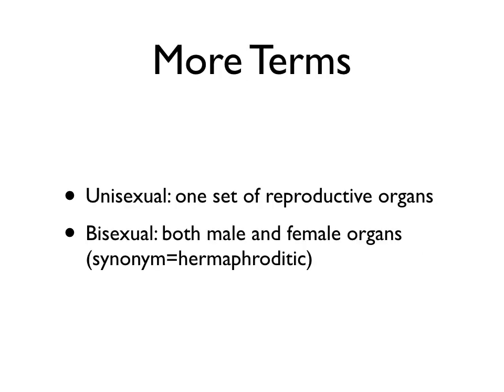A couple of other terms I'd like to touch on that you've almost certainly encountered before but likely not thought of in a biological sense are unisexual and bisexual. These are important because there are organisms we may discuss throughout this course that fall into one of these categories, and if you were thinking in the way these terms are used socially, you might not follow along correctly.